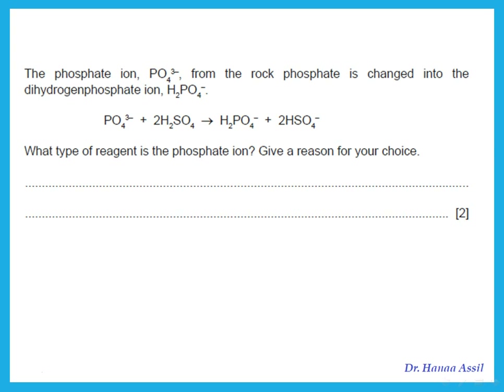The phosphate ion from rock phosphate is changed into something else. What type of reagent is the phosphate ion? Looking at the equation, the phosphate ion takes H+ from the acid — so it is acting as a base. If asked to give a reason: it is a base because it accepts a proton.